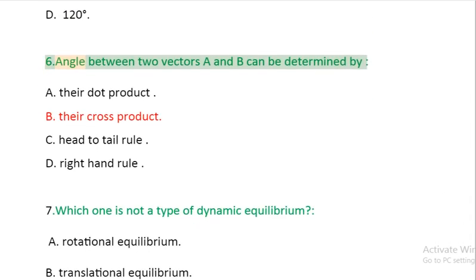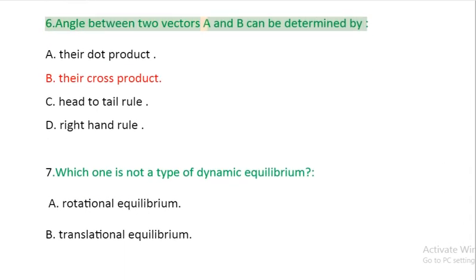Question 6: Angle between two vectors A and B can be determined by: A: their dot product. B: their cross product. C: head to tail rule. D: right hand rule.